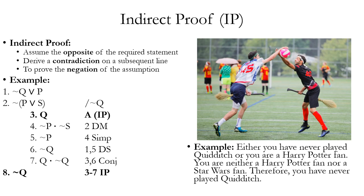Let's look at this example. Here's the natural language wording: Either you have never played Quidditch or you are a Harry Potter fan — that's tilde Q wedge P. You are neither a Harry Potter fan nor a Star Wars fan — that's tilde parentheses P wedge S. Therefore, you have never played Quidditch, tilde Q.